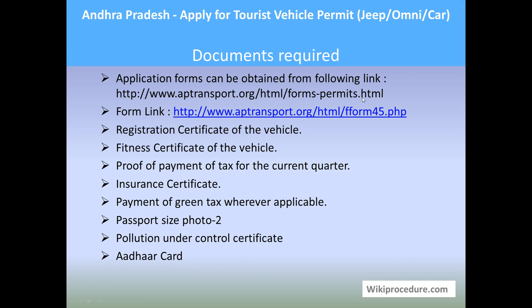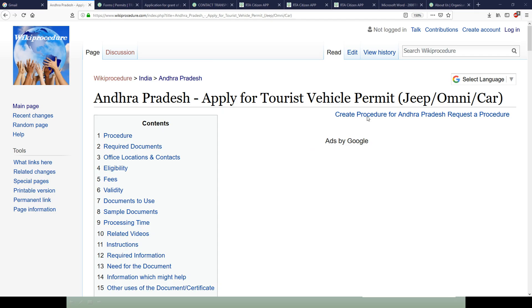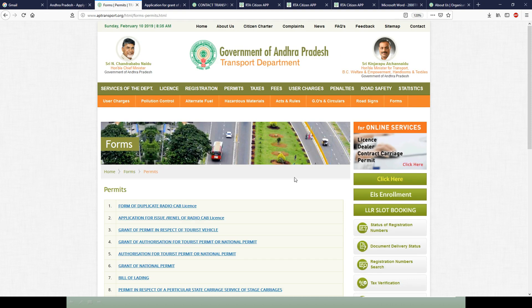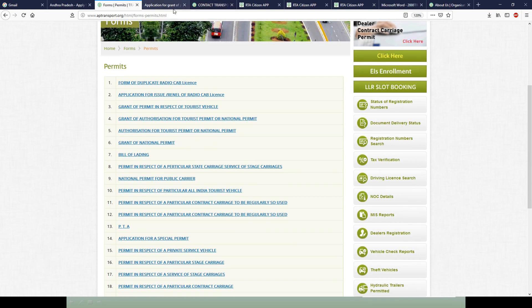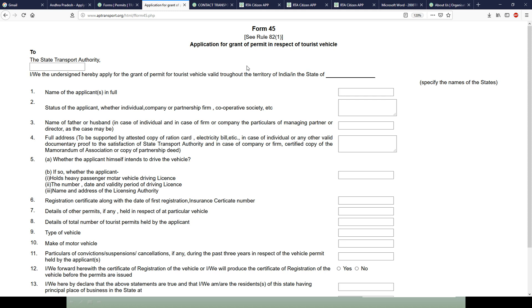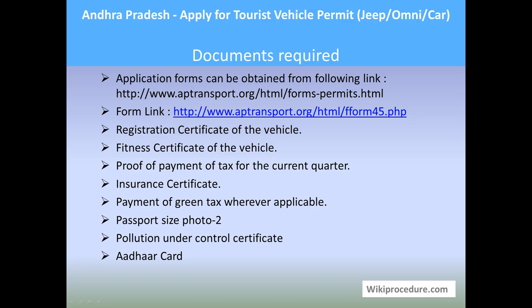Let us see the documents required for this procedure. You can download permit-related forms using the link provided; Form 45 is the one you need. You can download, print, and use it to apply. The required documents include: registration certificate of the vehicle, fitness certificate of the vehicle, proof of payment of tax for the current quarter, insurance certificate, payment of green tax wherever applicable, two passport size photos, pollution under control certificate, and other relevant documents. Overall, all dues for the vehicle must be paid to be eligible to apply.